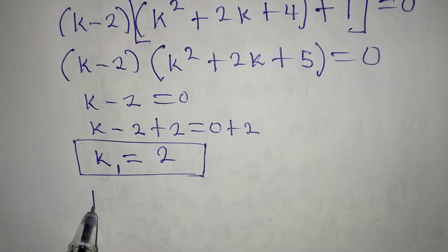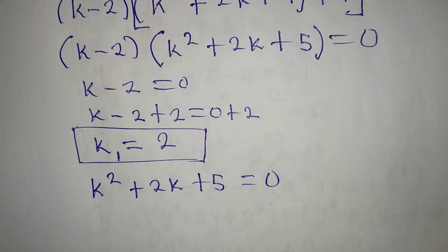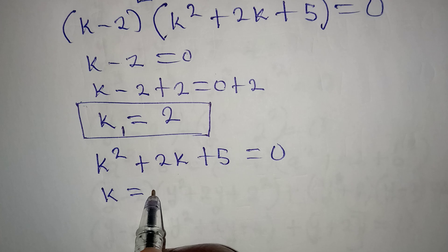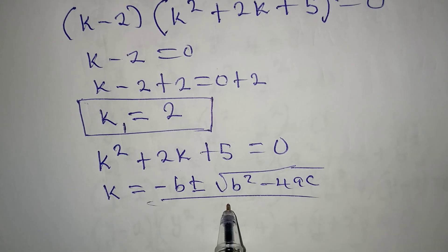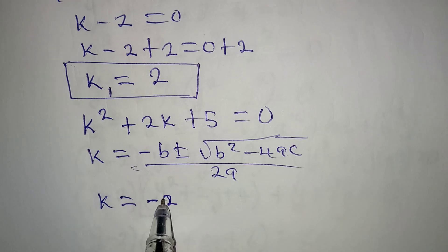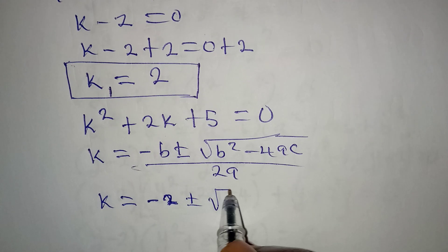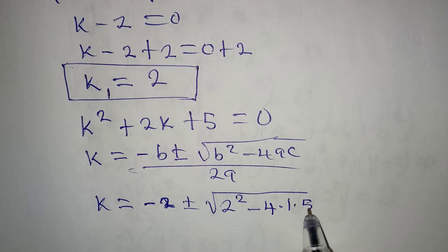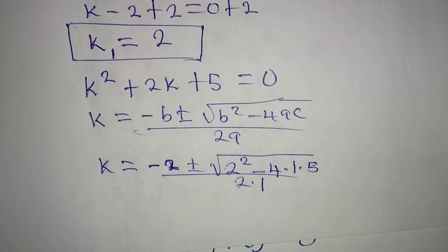Setting k squared plus 2k plus 5 equal to 0, we have a quadratic equation. Using the quadratic formula: k equals negative b, plus or minus the square root of b squared minus 4ac, all over 2a. Here b is 2, a is 1, and c is 5. So k equals negative 2, plus or minus the square root of 2 squared minus 4 times 1 times 5, all over 2 times 1.